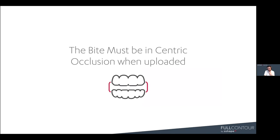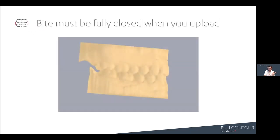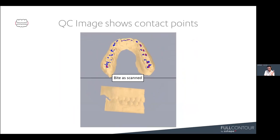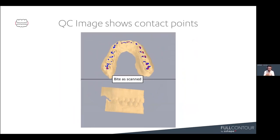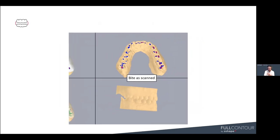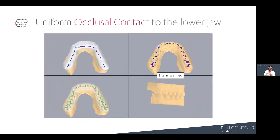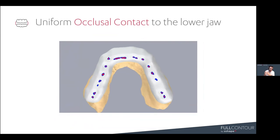An important point: the bite must be in centric occlusion when you upload. When you upload the case, we show you the bite as scanned and display the occlusal contact points as the arches are interdigitated, giving you a visual confirmation that your bite is in occlusion. You can also see the Nightguard against the opposing arch, showing nice, even, uniform occlusal contact to the lower — which means the Nightguard should have amazing uniform occlusal contact around the arch.